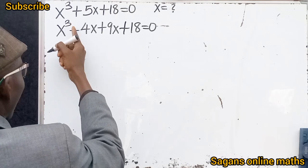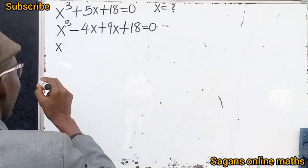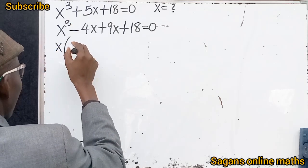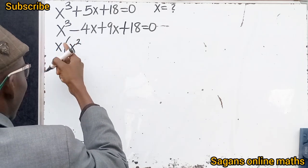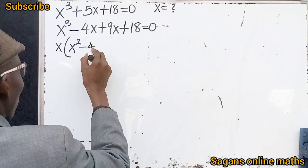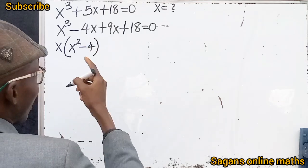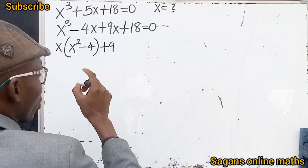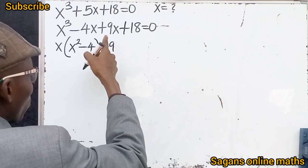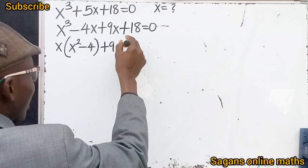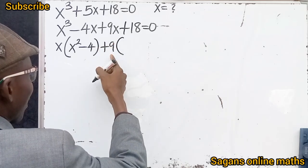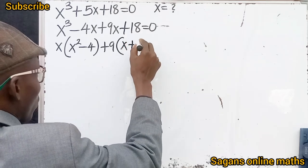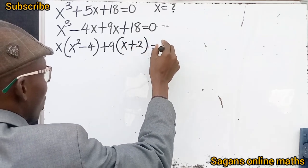For the left-hand side, considering x to the power of 3 and minus 4x, x is common. We bring out x: x divided into x³ gives x², and minus 4x divided by x gives minus 4, so we have x(x² minus 4). For the right-hand side, 9x and 18 — 9 is common. 9 into 9x gives x, and 18 divided by 9 gives 2, so we have 9(x plus 2). All this equals zero.